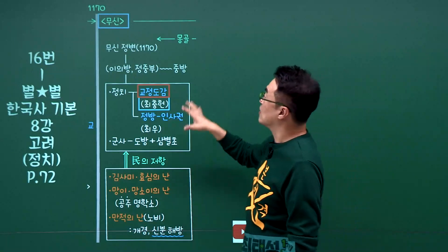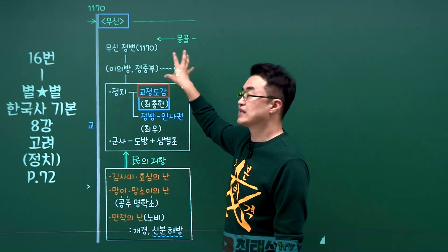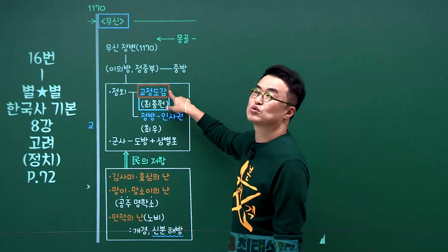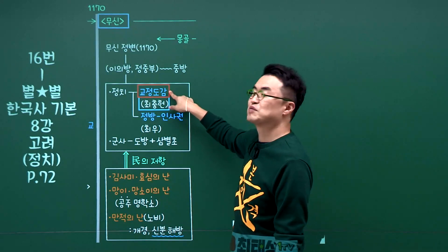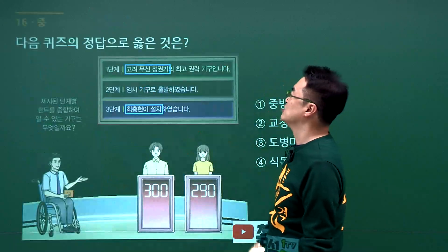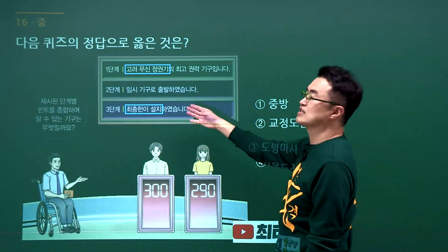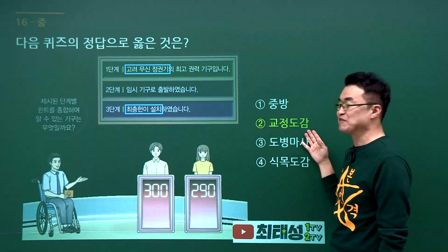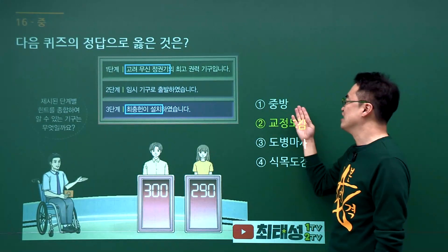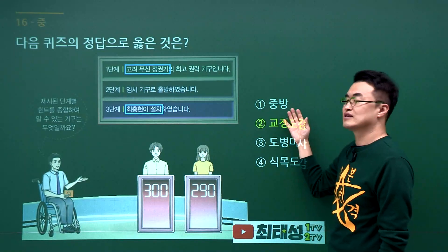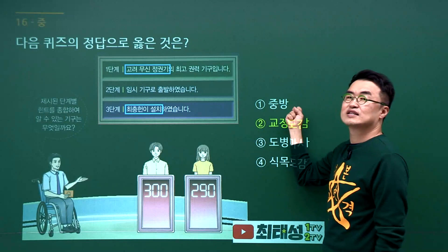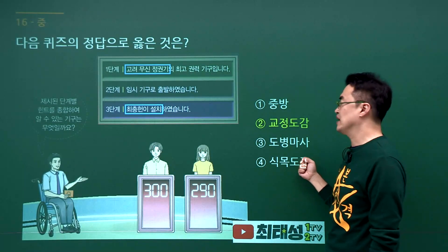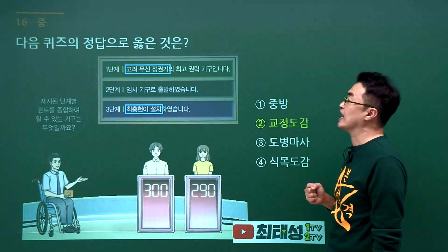고려 무신정권 시대 문제입니다. 최충헌이 만들었던 조직으로 교정도감이 있음을 공부했습니다. 최충헌이 설치한 조직이 무엇이냐는 물음에 교정도감이 정답입니다. 중방은 교정도감 이전 무신들의 회의 기구였고, 도병마사와 식목도감은 문신들의 회의 기구입니다. 정답은 2번입니다.